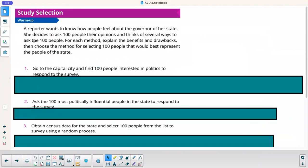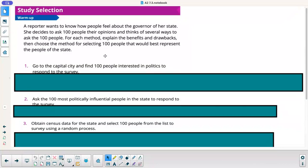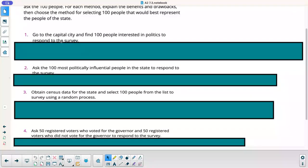Okay, our warm-up. A reporter wants to know how people feel about the governor of her state. She decided to ask 100 people their opinions and thinks of several ways to ask them. For each method, explain the benefits and drawbacks, then choose the method for selecting 100 people that would best represent the population of the state. First one, go to the capital city and find 100 people interested in politics to respond to the survey.